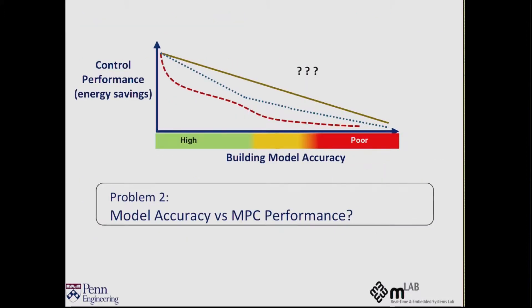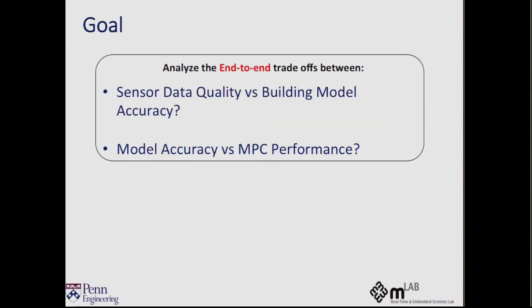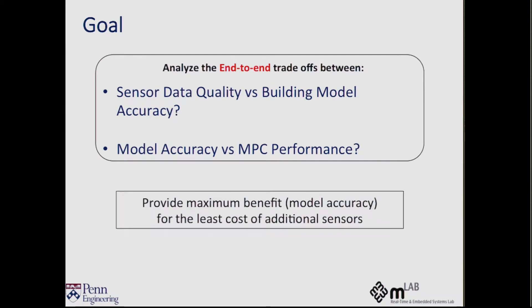But we don't want to stop there. We don't want to just end at accuracy, we want to continue this analysis and see how the quality of data in turn affects the closed-loop performance of a model-based controller. In particular, we want to reveal this trend of how the performance of a model-based controller changes as the accuracy of the underlying model also changes. So with these two objectives in mind, the goal is to provide maximum benefit in terms of accuracy of the model without adding a whole lot of additional sensors.